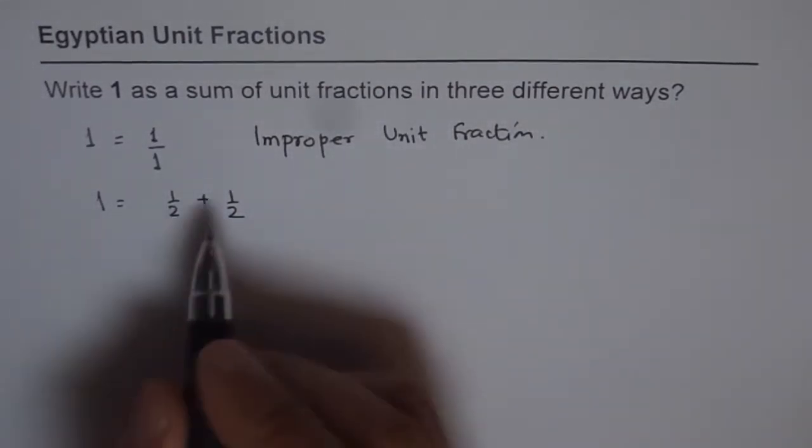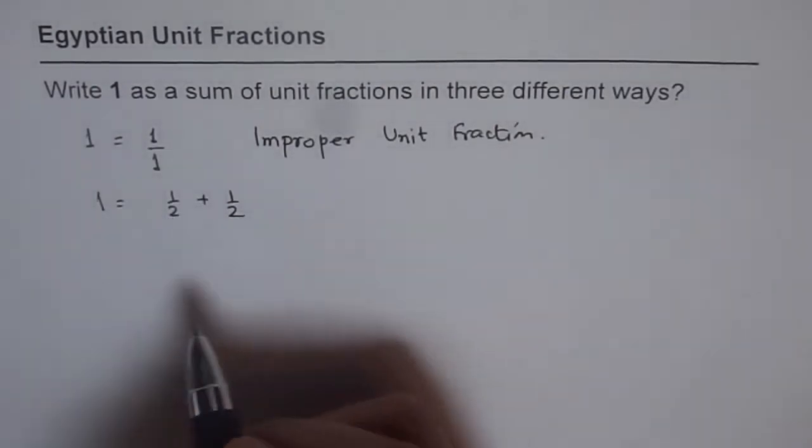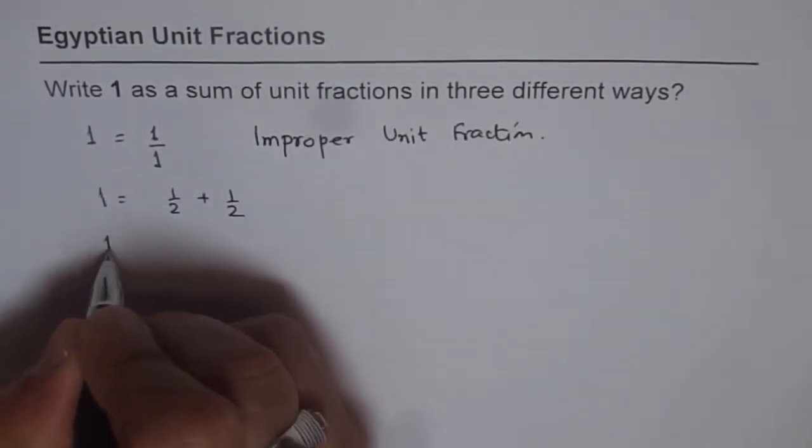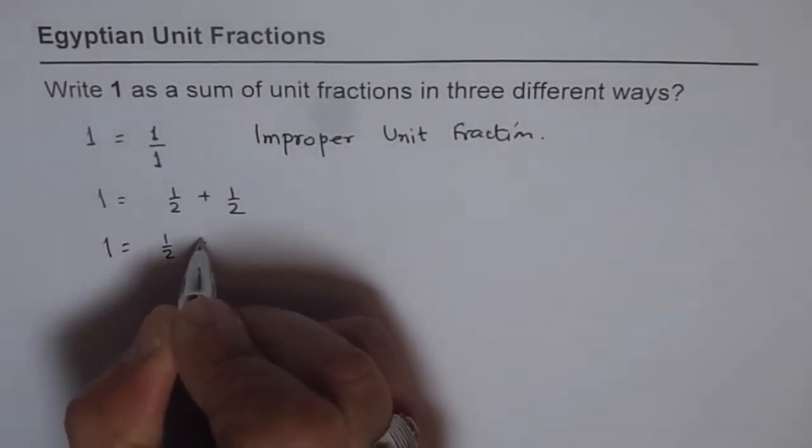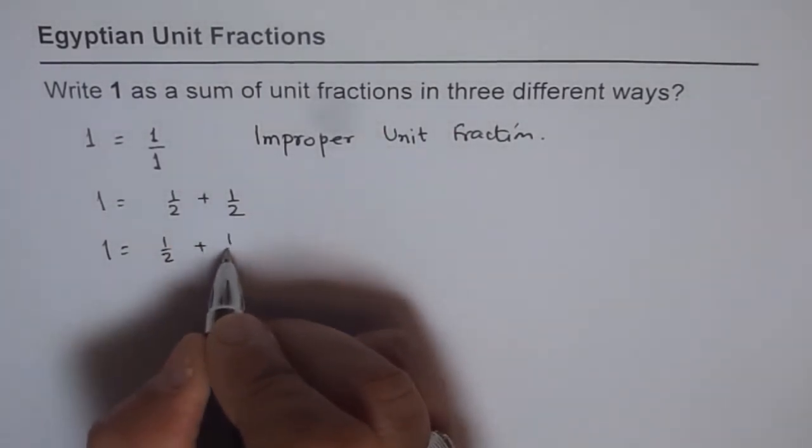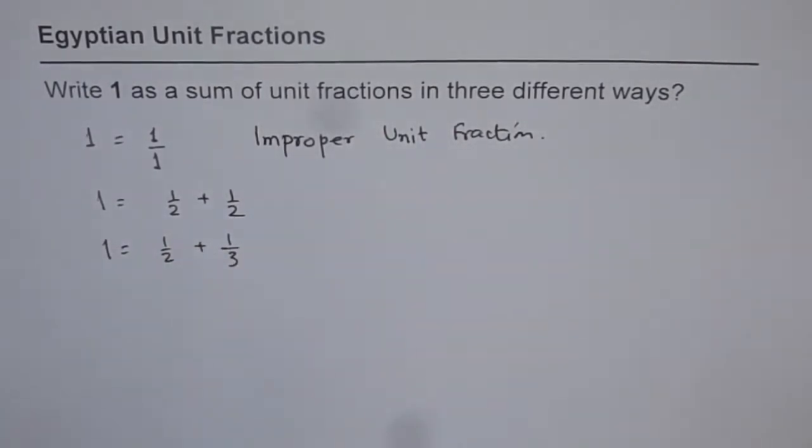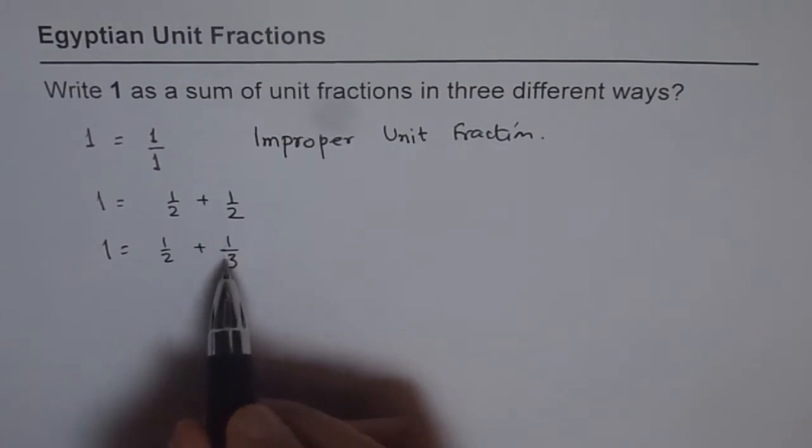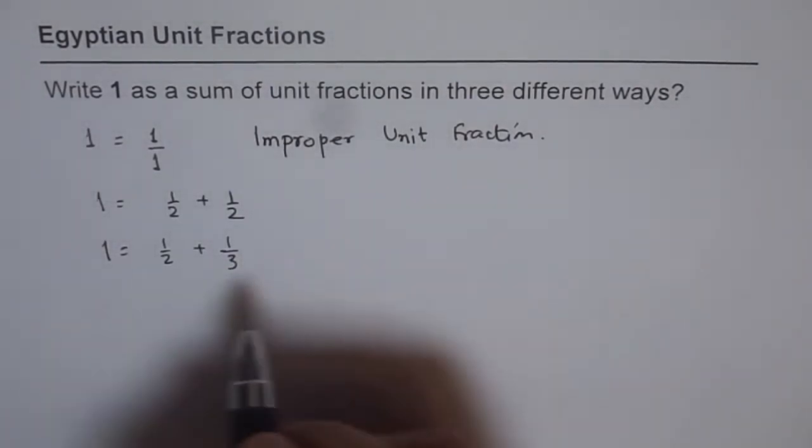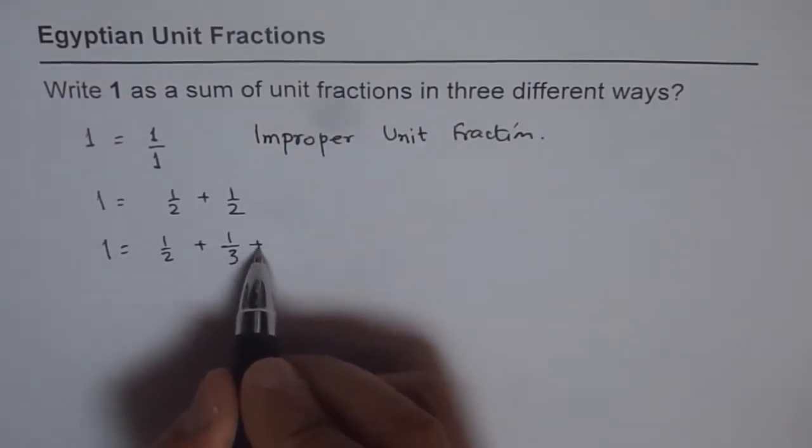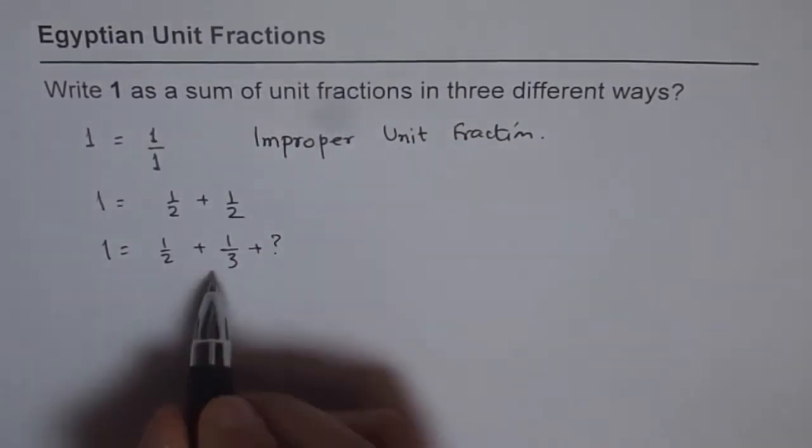And the other way is, now we can write in terms of sum of other unit fractions. We can write 1 as equals to half plus, instead of this half, we'll write 1 over 3 plus something else. Now what should that be? Let's figure out. So we'll do some rough work here to figure out 1 over 3 plus what. So to find that, this total should be half.